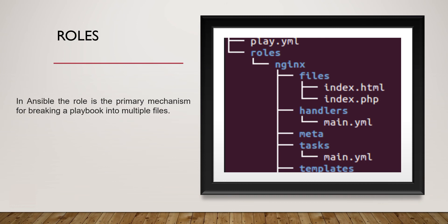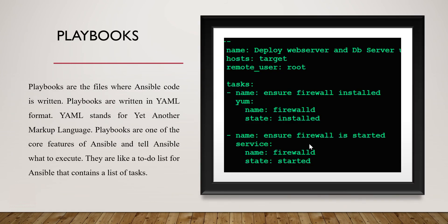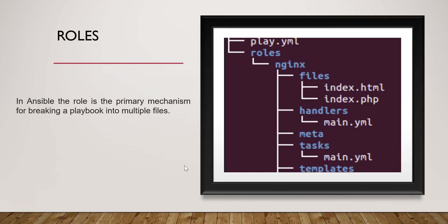The structure of a role consists of multiple directories, each serving a specific purpose. Tasks go under the task directory, handlers go under the handlers directory, index files go to the files directory, and templates go to the templates directory. These roles make your playbook very compact and easy to read and access.